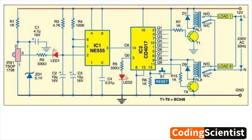The microcontroller, IC1, is programmed to interpret the IR signal. Upon receiving a valid signal, the microcontroller activates a transistor, T1, which in turn triggers the relay, RL1.